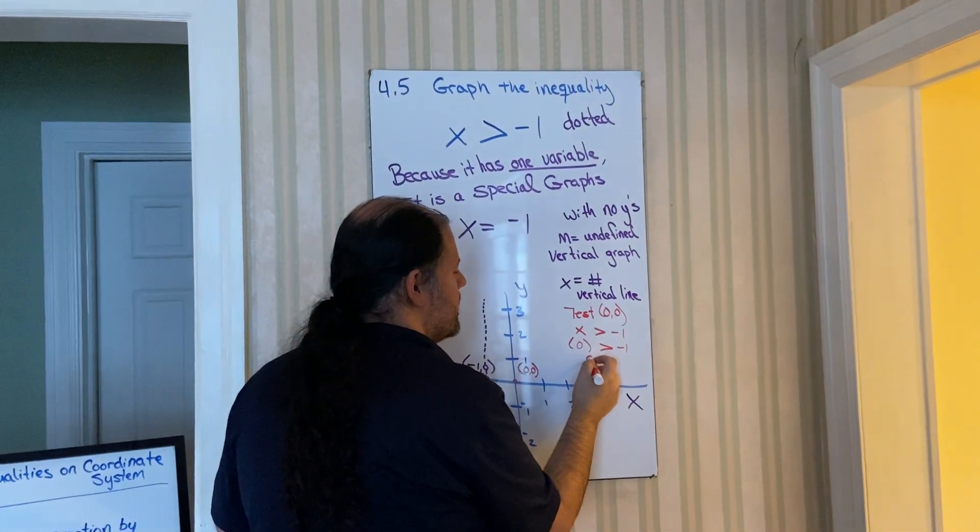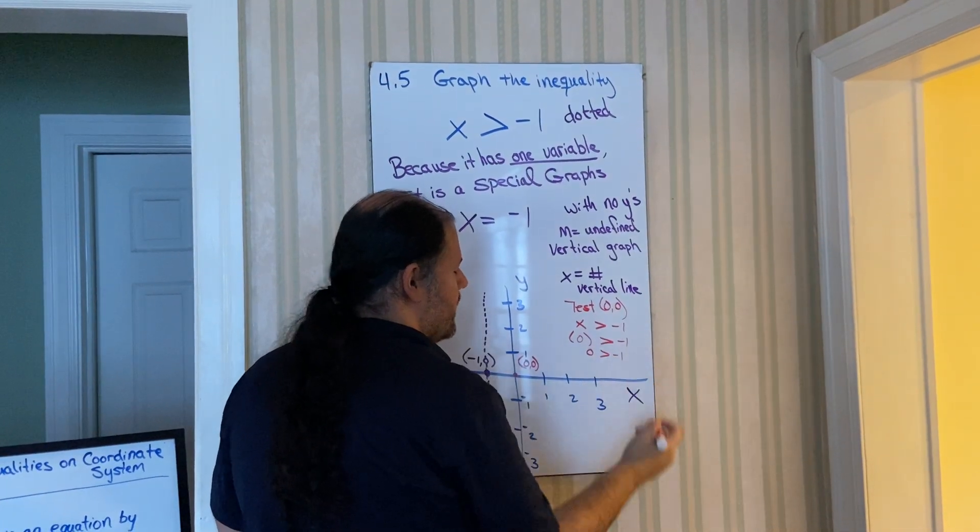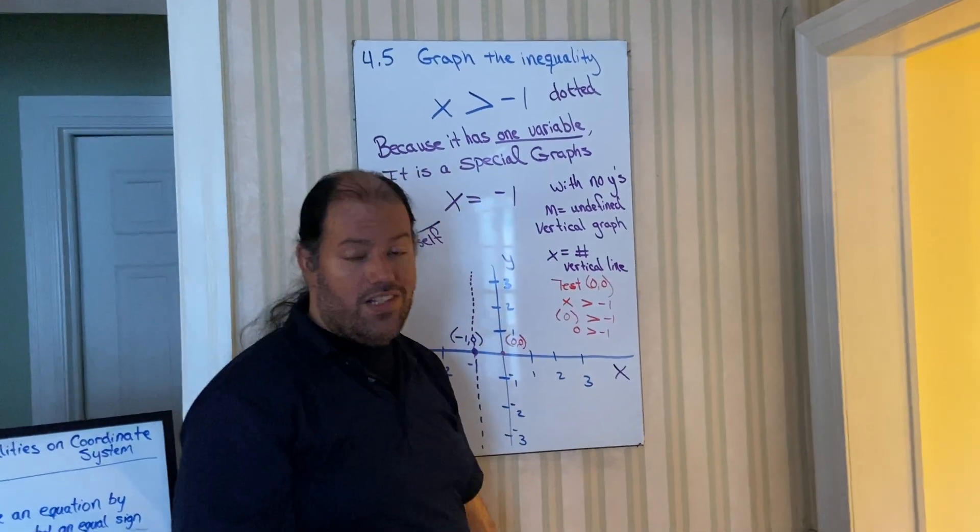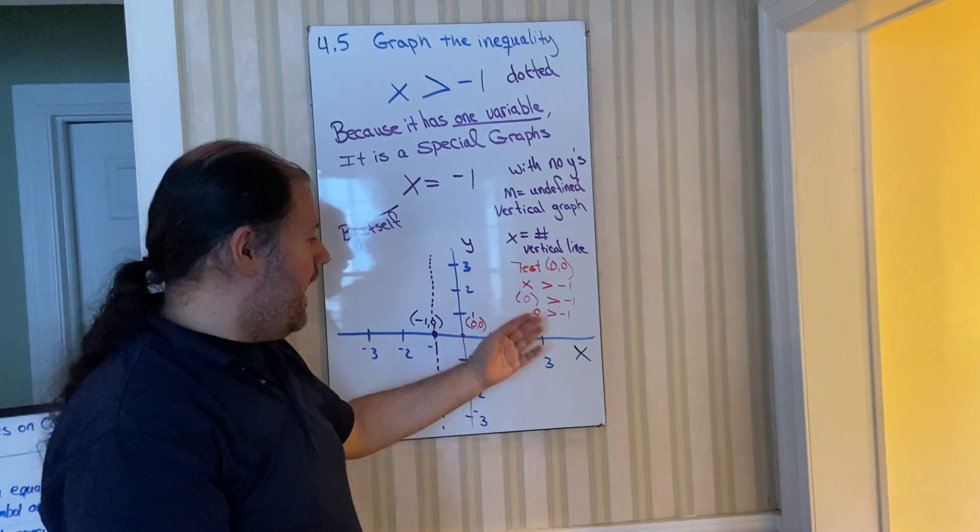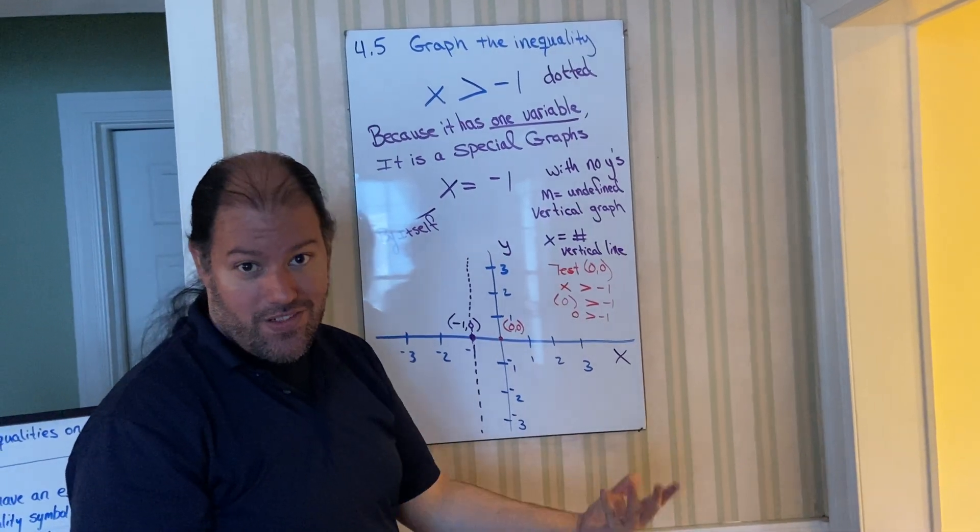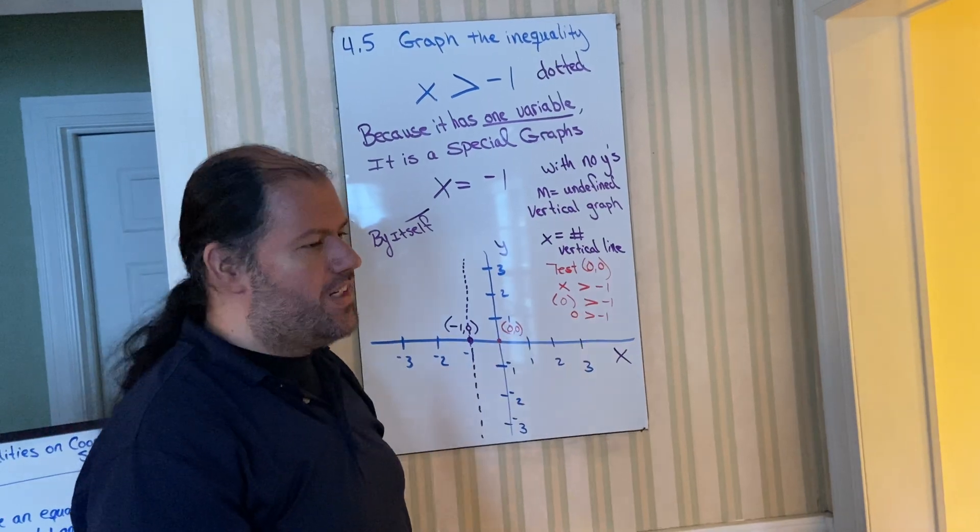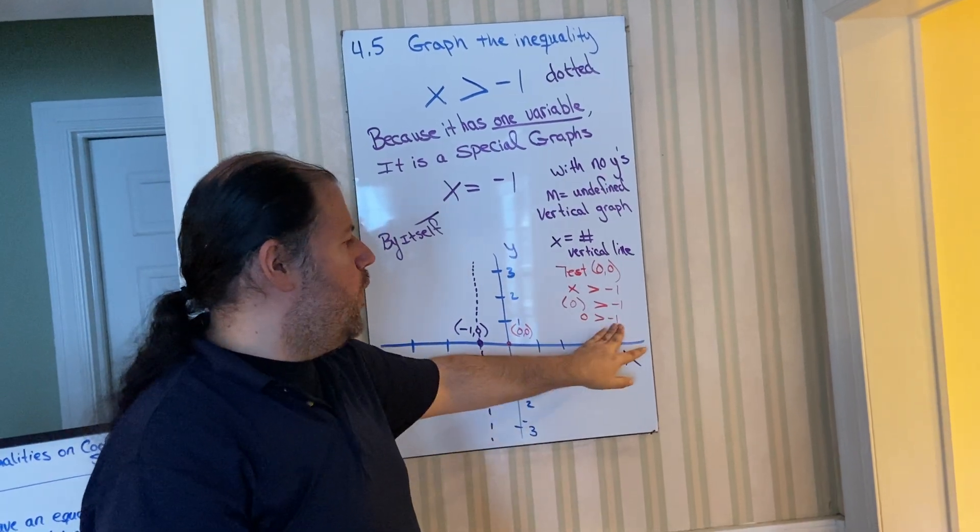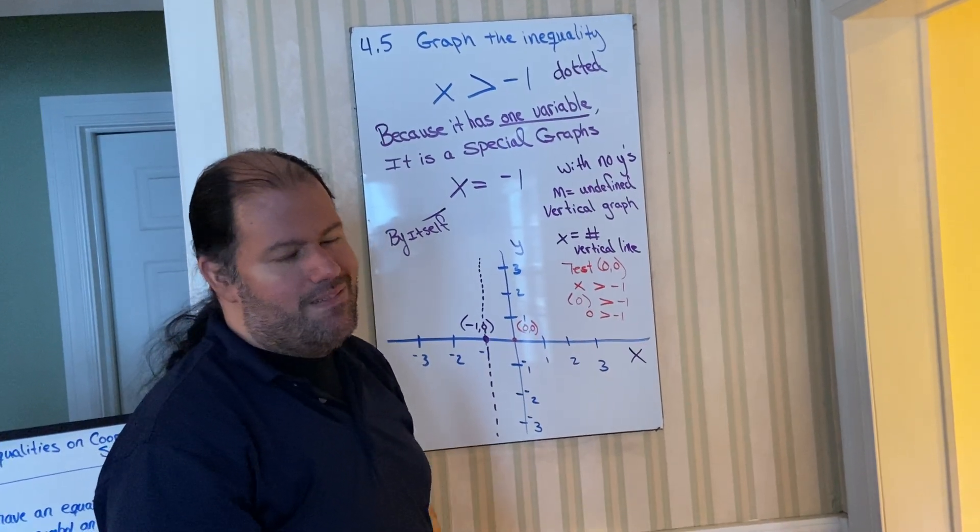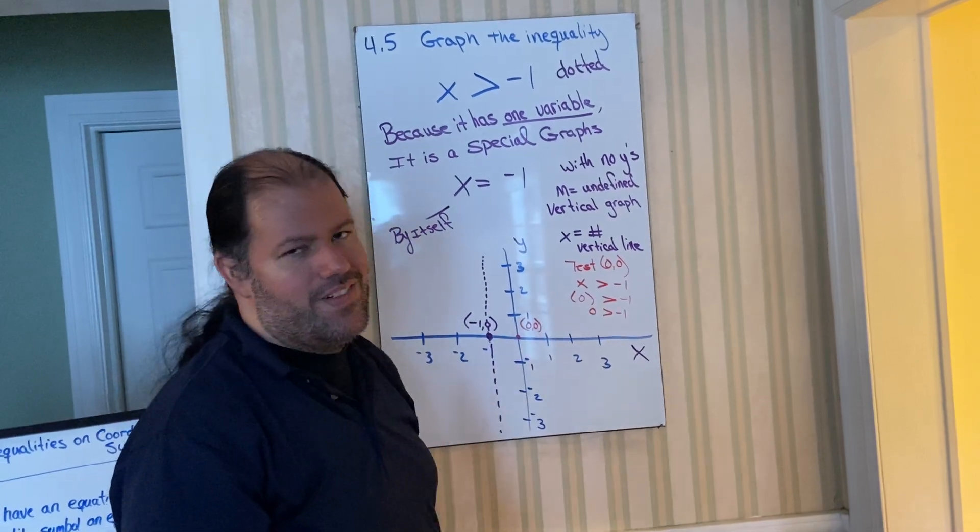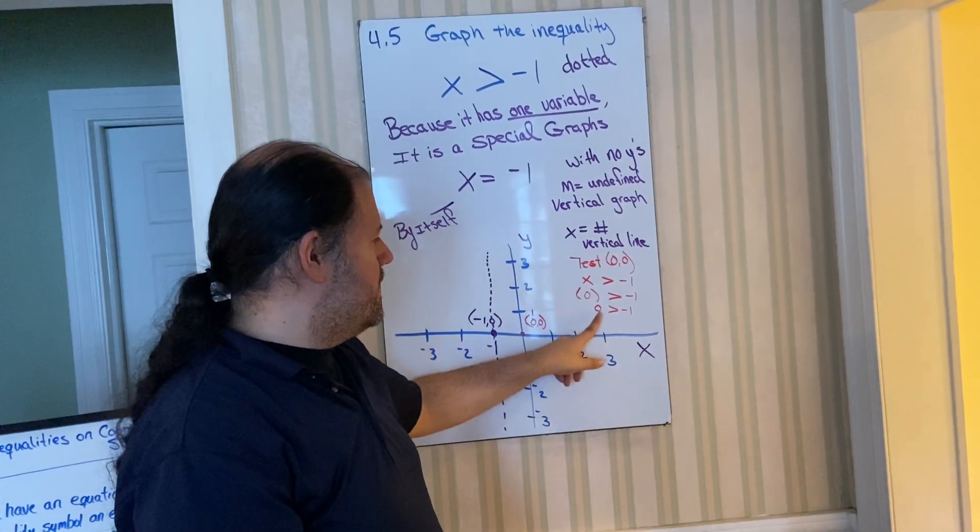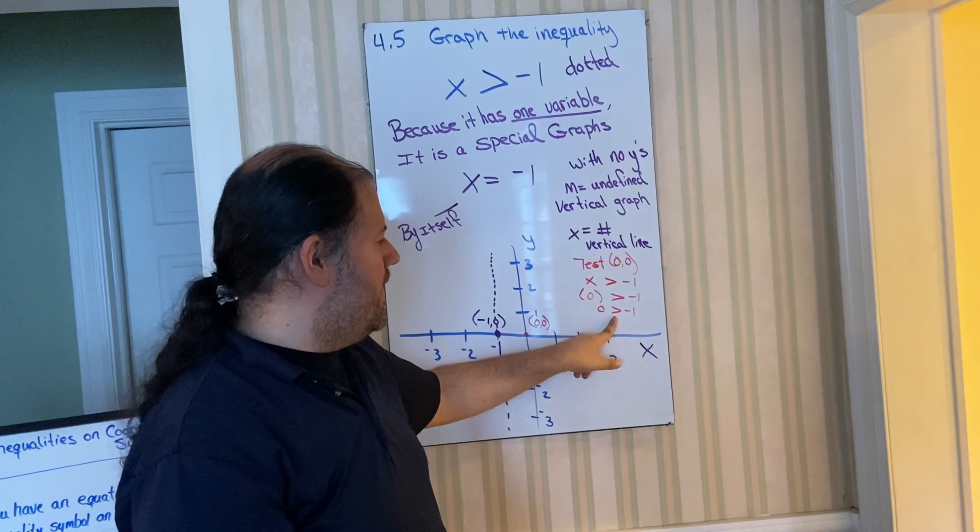When we distribute, we get zero is greater than negative one. So we asked ourselves, is that a true statement? Hmm. Alligator has already chosen zero as the bigger meal. Let's see if I'm in agreement. Would I rather have zero dollars in my pocket or would I rather owe someone a whole dollar? Yeah, I'd rather be with zero dollars than to owe someone. So alligator choose zero. I chose zero.